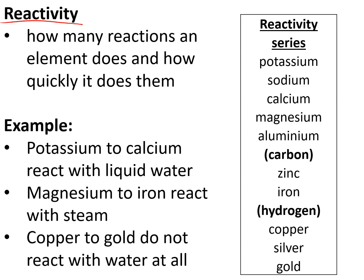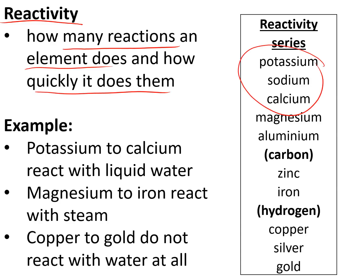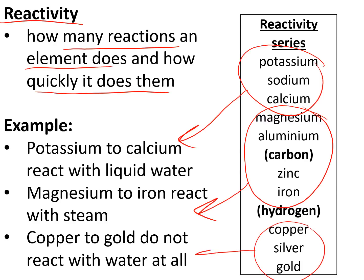Reactivity tells us how many reactions an element does and how quickly. The most reactive elements — potassium, sodium, and calcium — will react with cold water. The next most reactive — magnesium, aluminium, zinc, and iron — will react with water but it has to be hot water or steam. The least reactive metals — copper, silver, and gold — do not react with water at all. Note that on the reactivity series, carbon and hydrogen also appear and you still need to know their positions even though they are not metals.